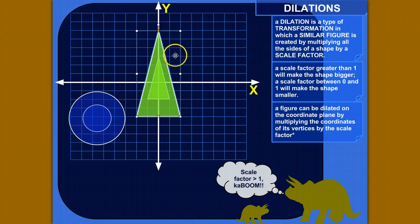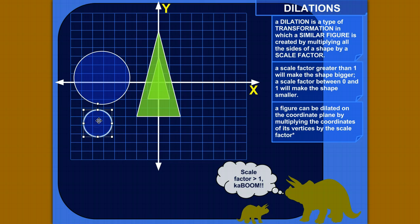It's multiplied—the way it's dilated is it's multiplied by a scale factor. The scale factor basically tells the figure how much to get bigger, by how much to get smaller.